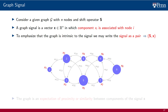Although a graph signal is just a vector, the shift operator is considered intrinsic to the signal. When we want to emphasize this fact, we write the signal as a pair made up of the shift operator and the signal itself. The graph is an expectation of proximity or similarity between the components of the signal X, and the objective of graph signal processing is to leverage this prior information in the processing of the signal.